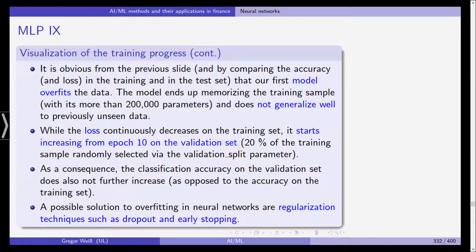It's obvious that when we look at the previous slide where we compare the loss and the accuracy in the training and in the test data, that this first very simple multi-layer perceptron overfits the data. What happens is the model ends up memorizing the training sample because we have more parameters than we actually have observations.